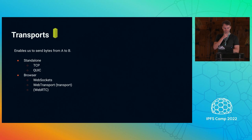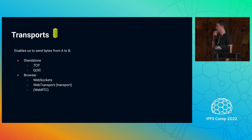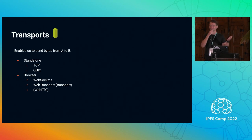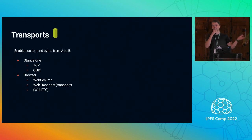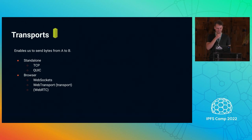First thing: transports. They allow us to get bytes from A to B. That's relevant for our chat application — we want to send messages from A to B, so that's really something we want.